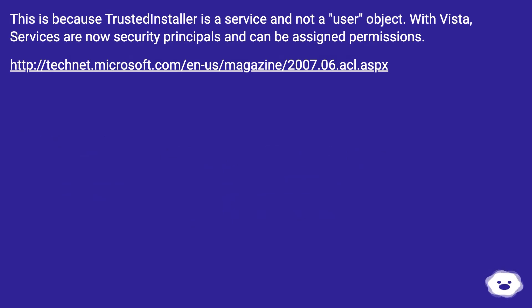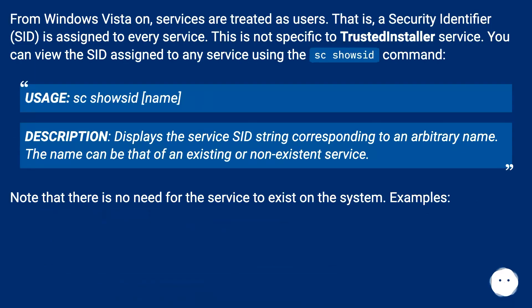This is because TrustedInstaller is a service and not a user object. With Vista, services are now security principals and can be assigned permissions. A security identifier (SID) is assigned to every service. This is not specific to TrustedInstaller. You can view the SID assigned to any service using the sc showsid command. Usage: sc showsid [name] — displays the service SID string corresponding to an arbitrary name. The name can be that of an existing or non-existent service.